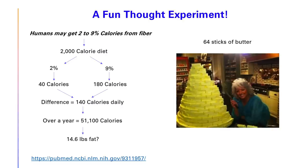Over one year, that variation amounts to 51,100 calories — equal to about 14.6 pounds of fat using the 3,500 calories-per-pound conversion, or 64 sticks of butter. Just from variation in how your microbiome processes calories from fiber. Obviously this is an extreme example — I'm not trying to say fiber makes you fat. I'm just making the general point, using fiber and the microbiome as an example, that we process food very differently from each other, and very differently than a bomb calorimeter.